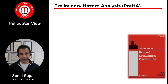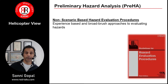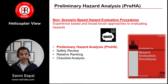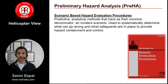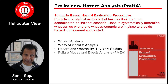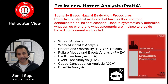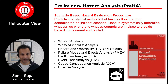In the CCPS Guidelines for Hazard Evaluation Processes, they talk about non-scenario-based hazard evaluation procedures. You can see the techniques at the top end — one of those is the Pre-HA, safety reviews, relative ranking, and also checklist analysis. They also have scenario-based hazard evaluation procedures, which include what-if analysis, what-if checklists, and hazard operability studies, which we've covered before. If you enjoy acronyms, you can certainly find quite a few here.